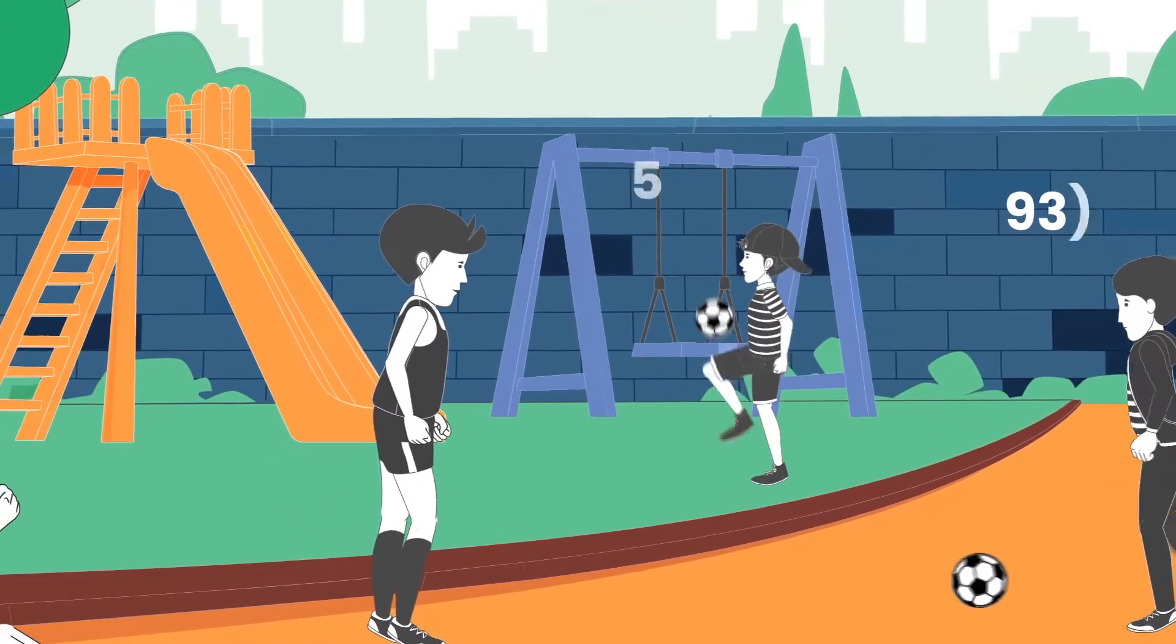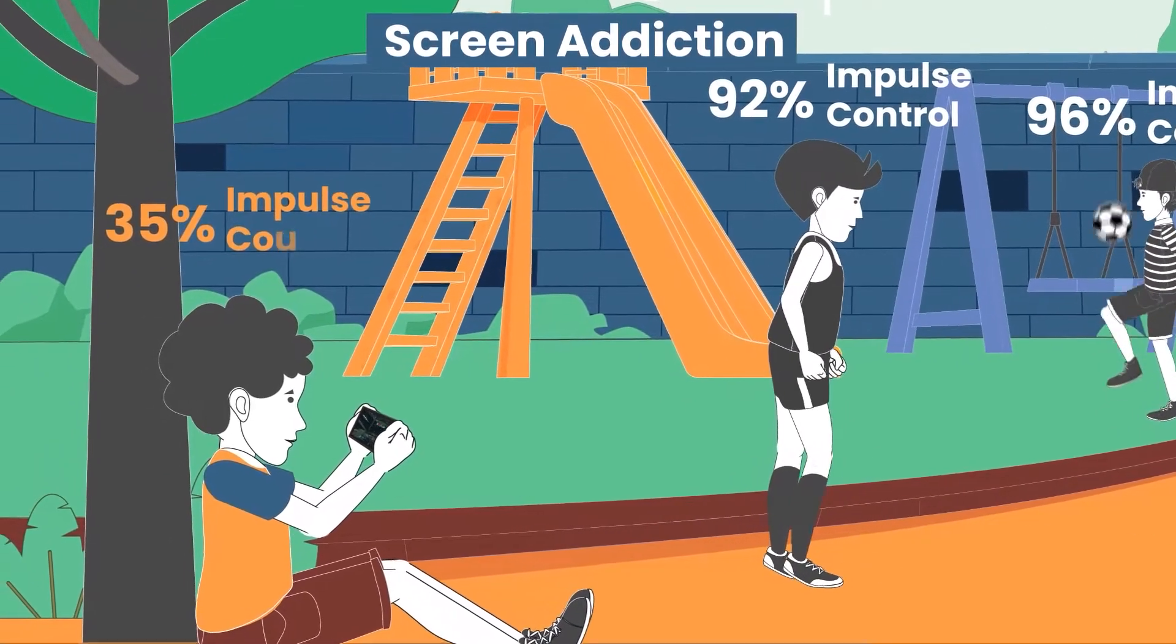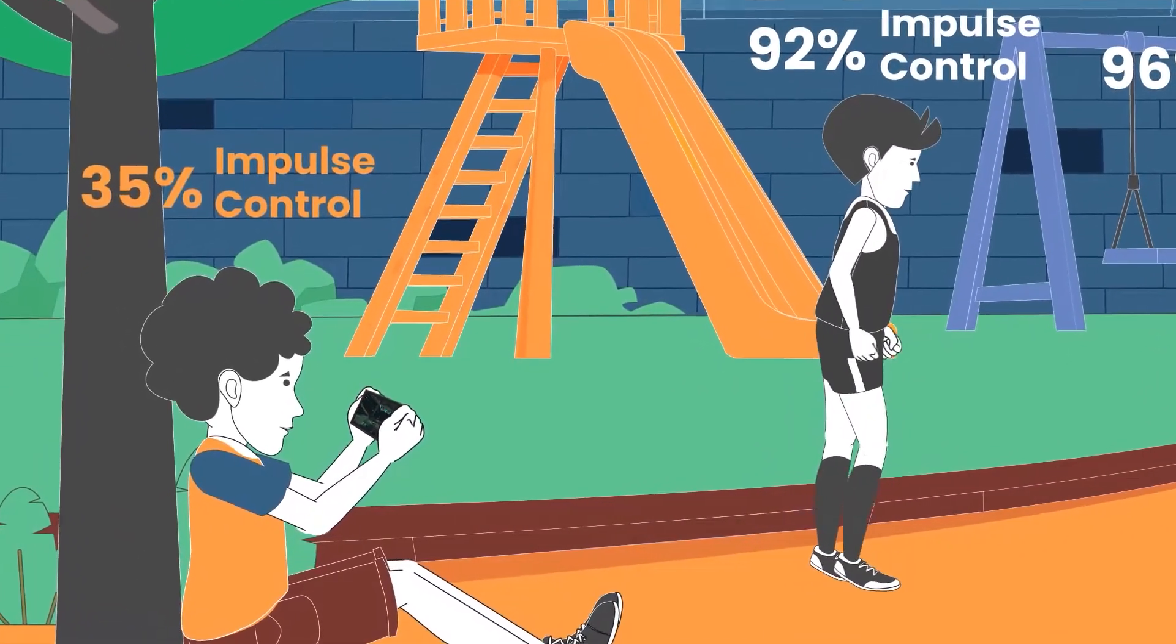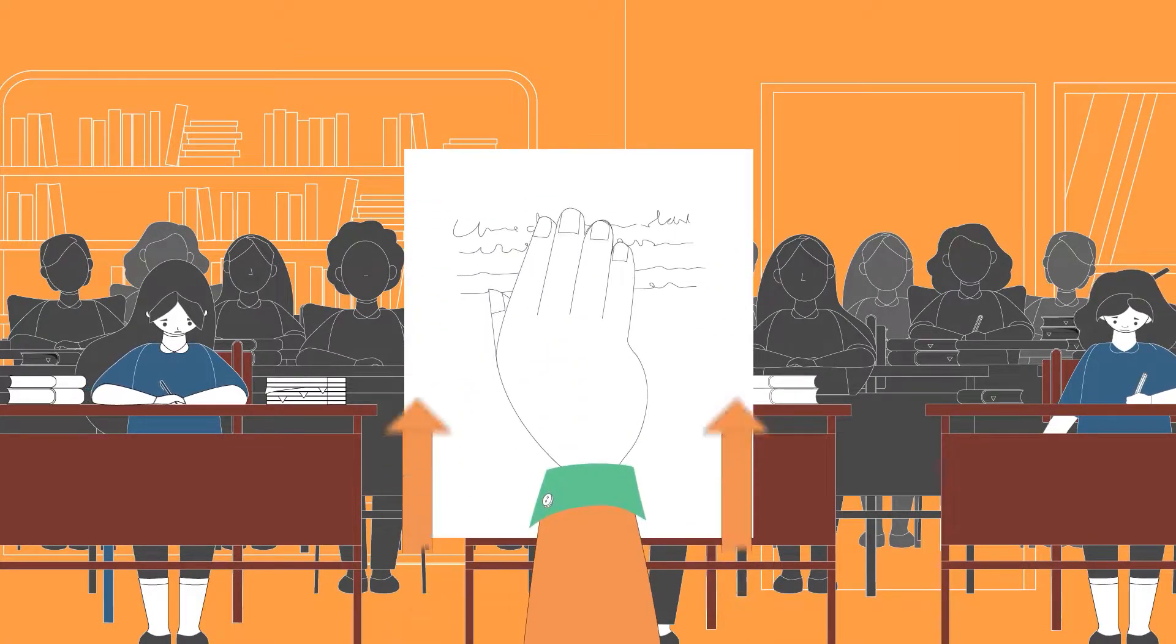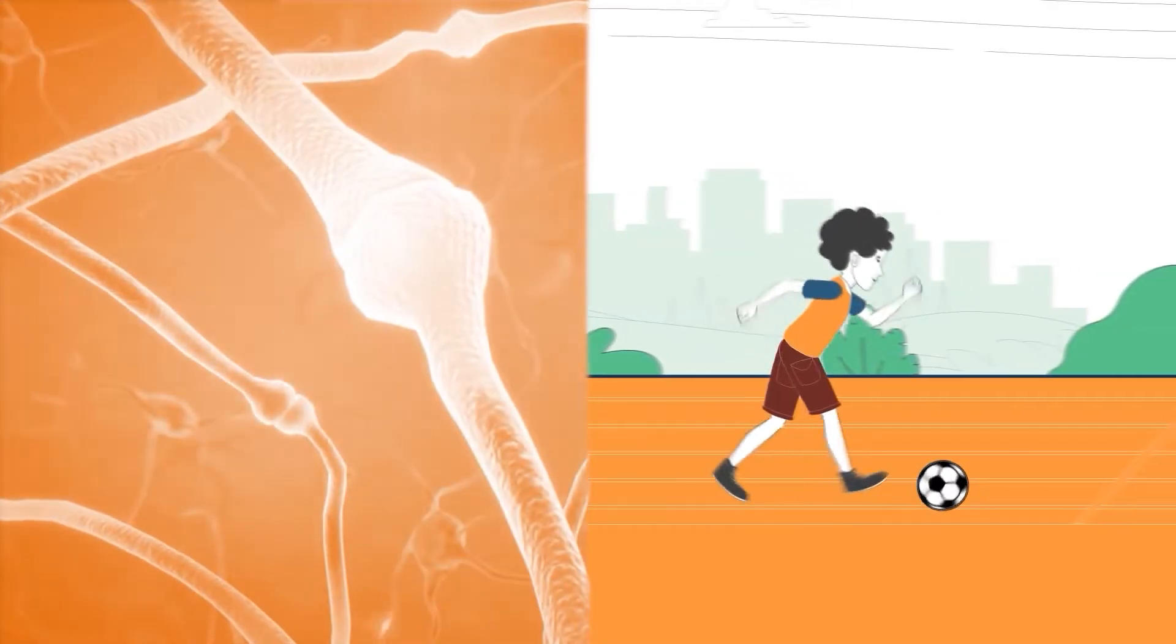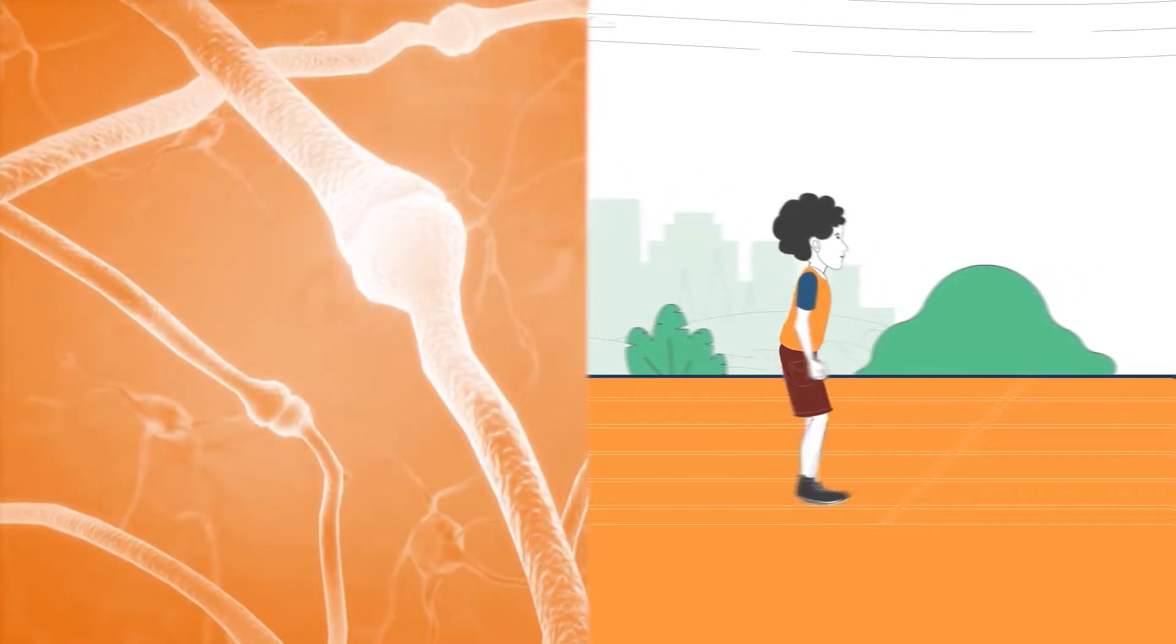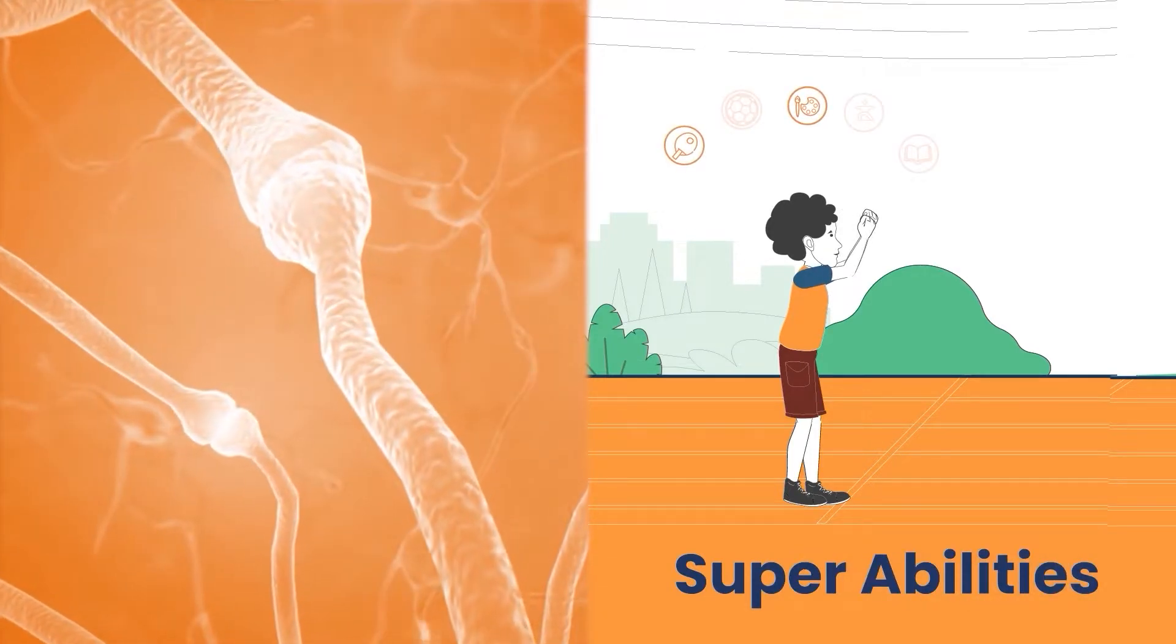Similarly, imagine a child trying to control his screen addiction without the super ability of self-regulation or a child trying to improve his handwriting without having the super ability of arm-hand steadiness. This means the key to master anything is to master the super abilities and skills associated with it.